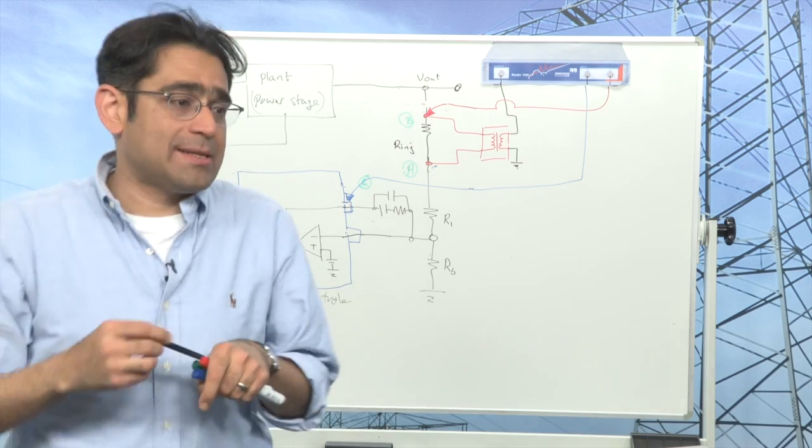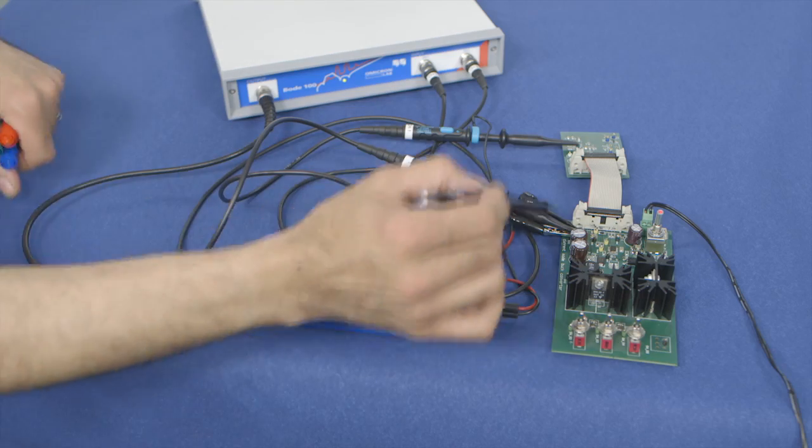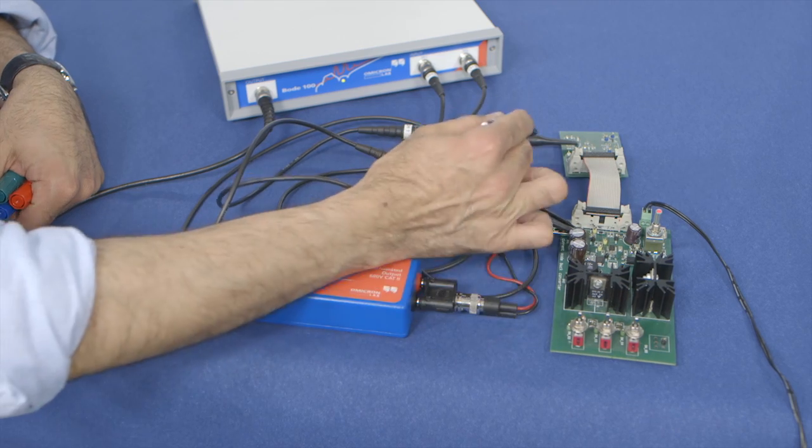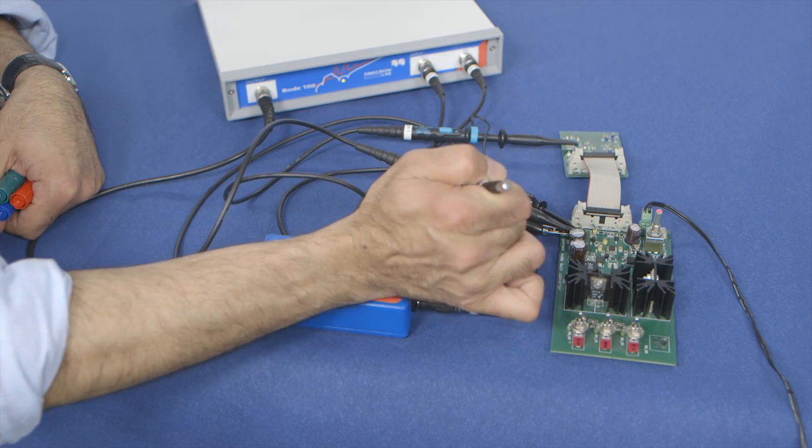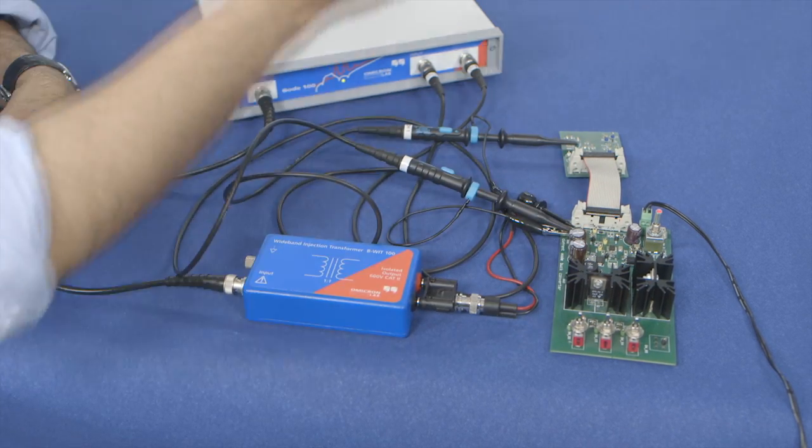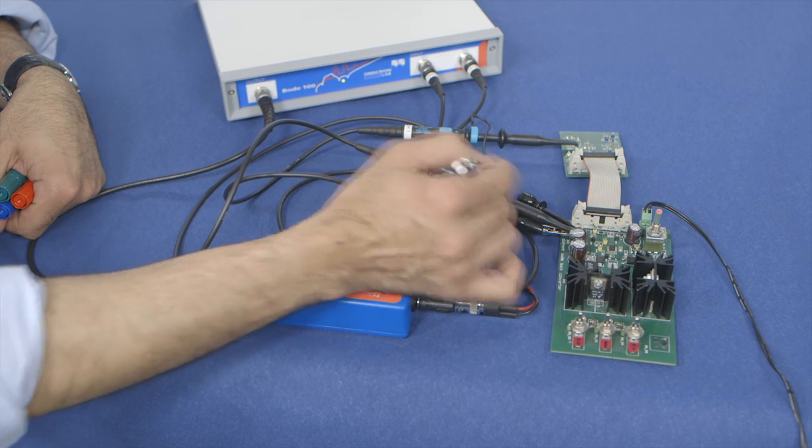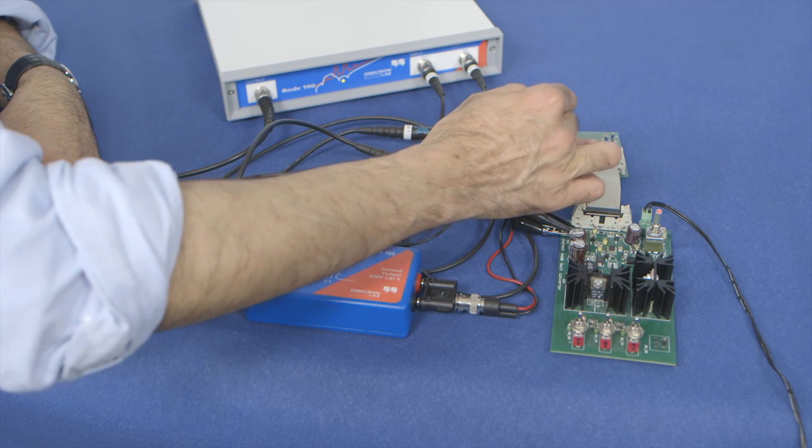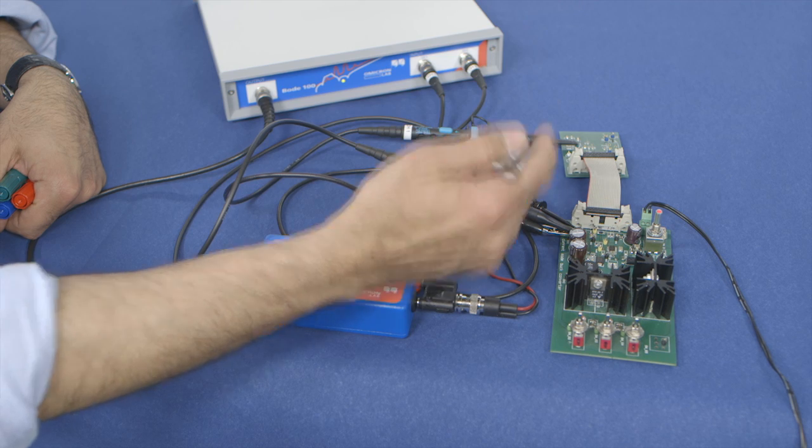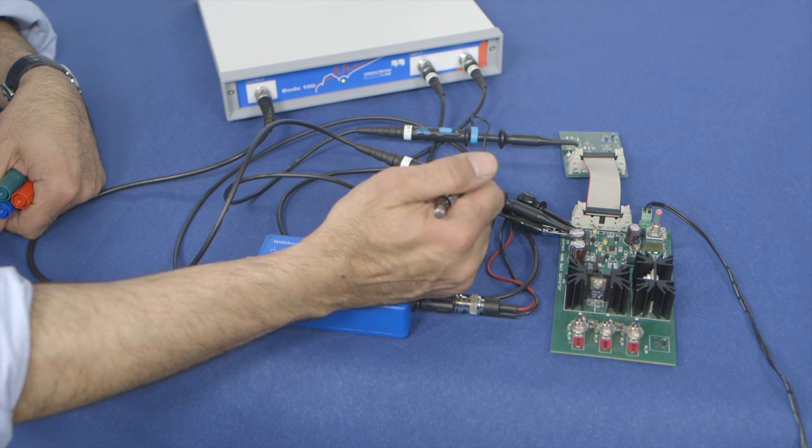So if you go back to the setup again this is our standard buck converter that we are using. I have already set up the probes as I've drawn on that diagram. Channel 2 is connected to this point. Channel 1 is now connected to the comp pin or the output of the op-amp of the controller.